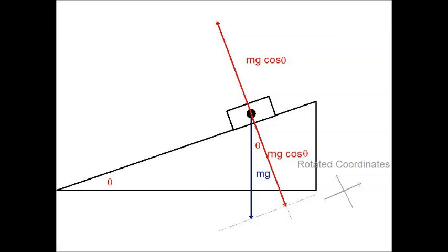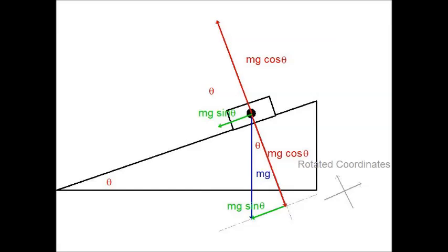Now, we need the opposite component, so we have mg sine theta, so that'll be parallel to the surface, causing the acceleration of the block. Down the incline, in response to the movement, we have good old friction pointing opposite the motion, back up the block in this case.